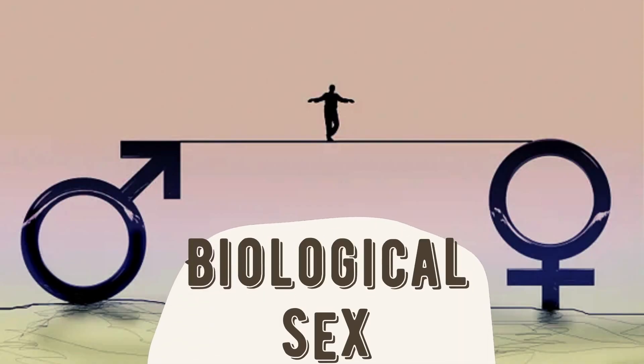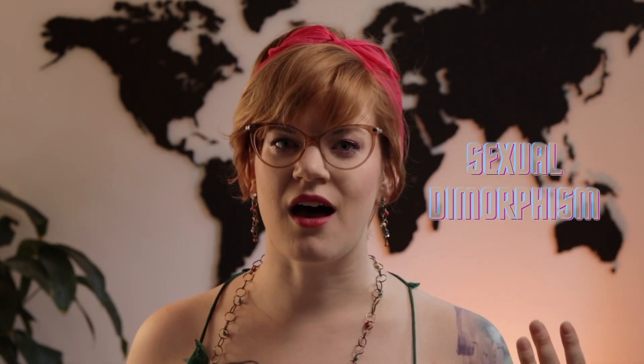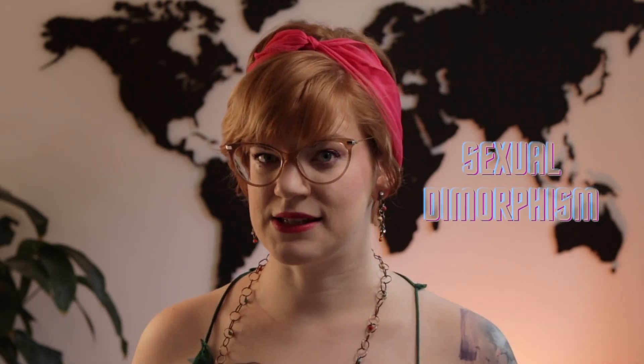Now let's move to biological sex — this matter is a little bit more complicated. Humans, like many other animals, are considered to be a species of sexual dimorphism, meaning that there are differences in appearance between the sexes. You can see sexual dimorphism very clearly in male and female ducks, other birds, and also lions.